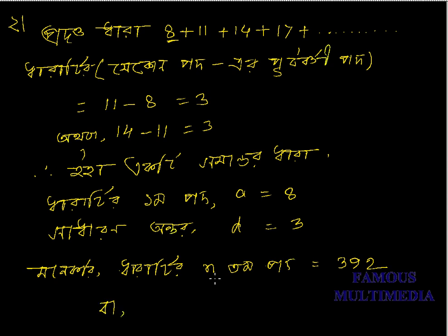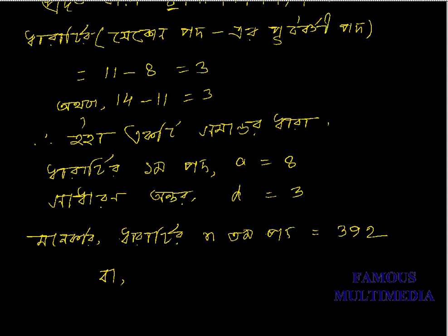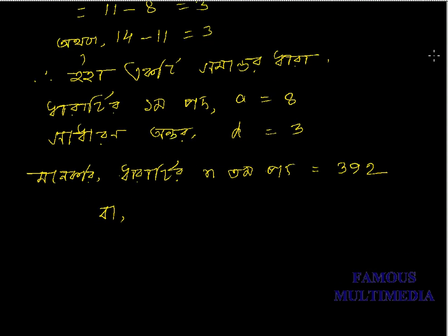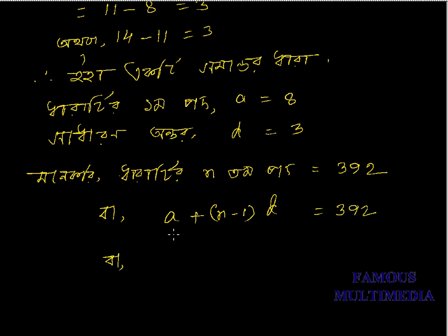We know that the n-th term is equal to a plus n minus 1 into d, equal to 392. Or that means n minus 1 into d equals 392.